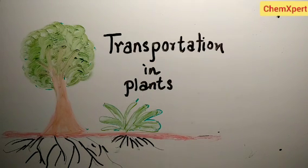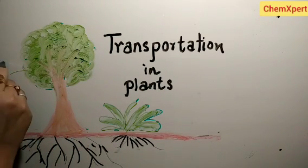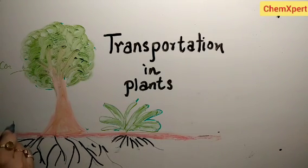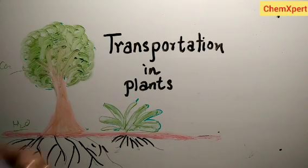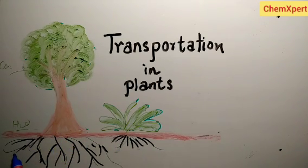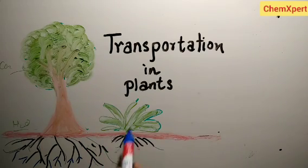Today we will discuss transportation in plants in the photosynthesis topic. A plant requires carbon dioxide, and one of the raw materials is water. Carbon dioxide comes from the atmosphere, but water comes from the nearest source, which is the soil. So all the nutrients other than carbon dioxide required by the plant are obtained from the soil.